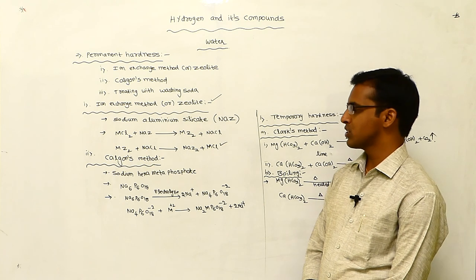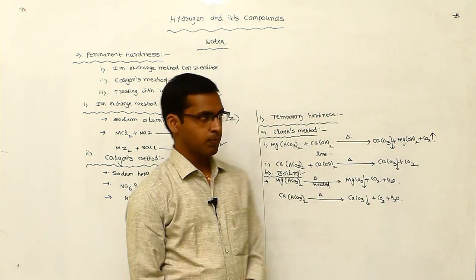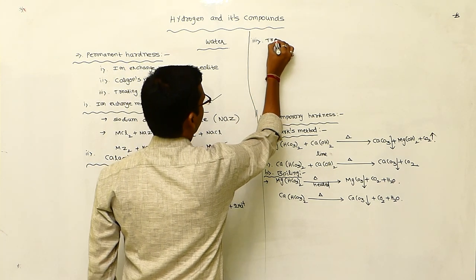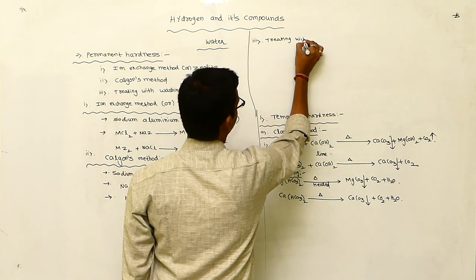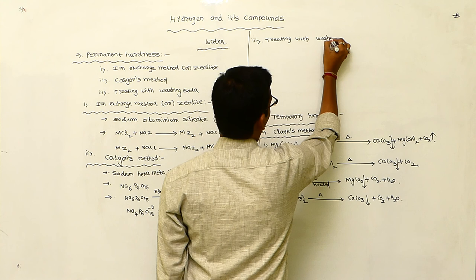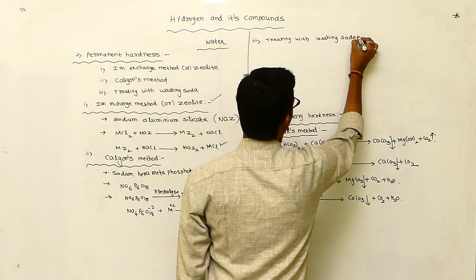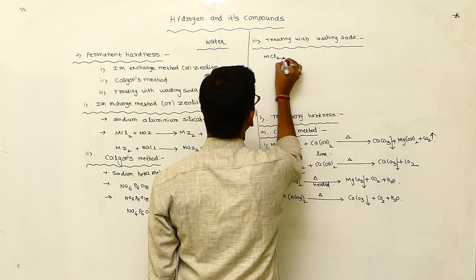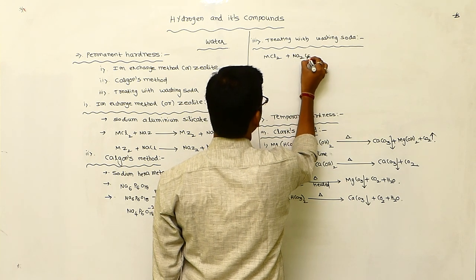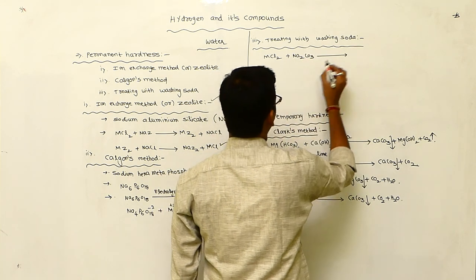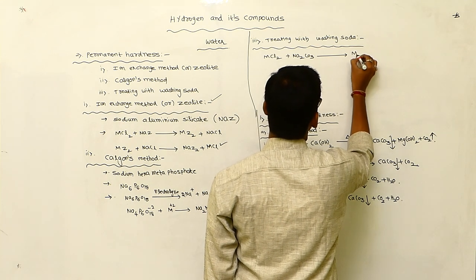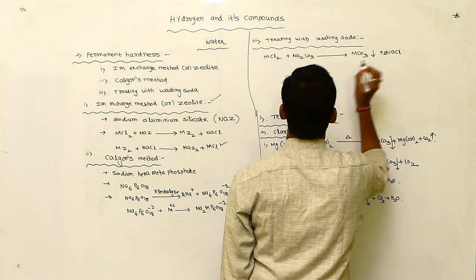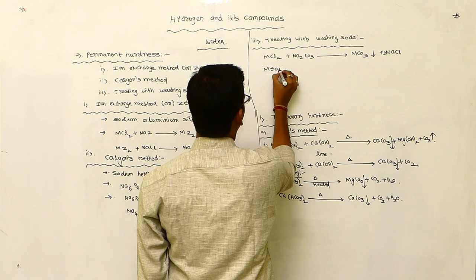The next method is treating with washing soda. Metal chlorides or metal sulfates — MCl₂ reacts with washing soda Na₂CO₃ and is converted to MCO₃, which is a metal carbonate and is an insoluble substance, plus 2 NaCl. For metal sulfate, MSO₄ is present.